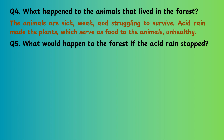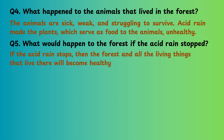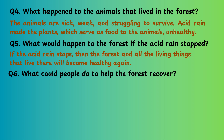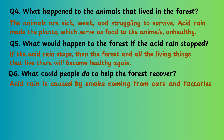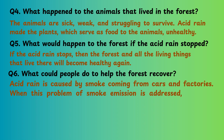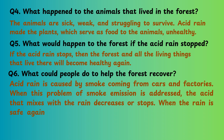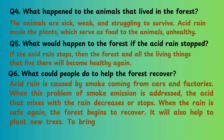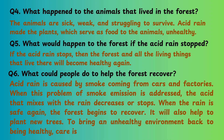What would happen to the forest if the acid rain stopped? If the acid rain stopped, then the forest and all the living things that live there will become healthy again. What could people do to help the forest recover? Acid rain is caused by smoke coming from cars and factories. When smoke emissions are addressed, the acid that mixes with the rain decreases or stops. When the rain is safe again, the forest begins to recover. It will also help to plant new trees to bring an unhealthy environment back to being healthy. Care is needed.